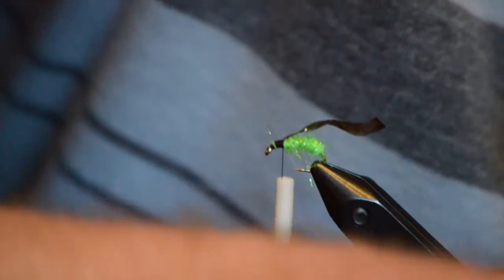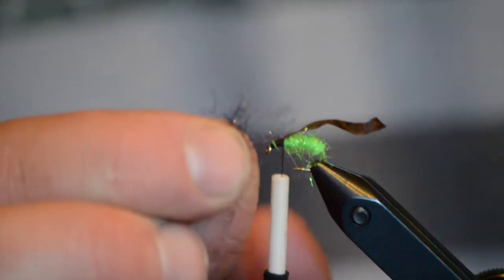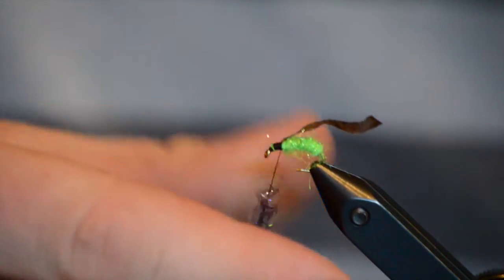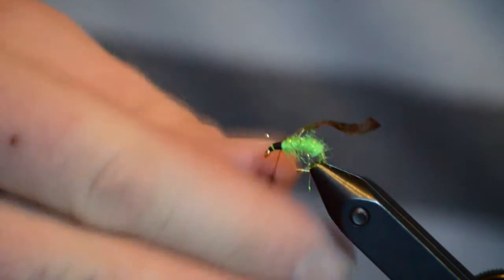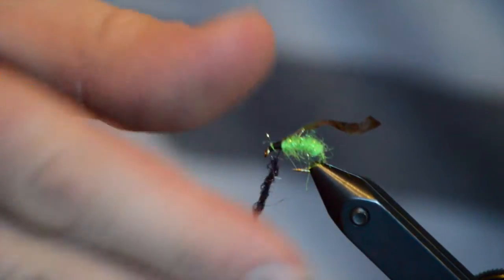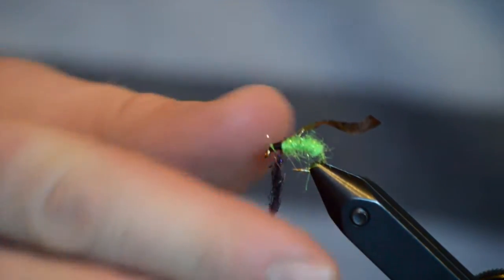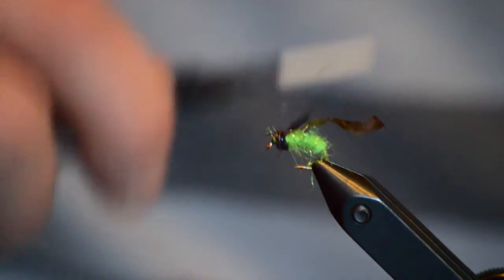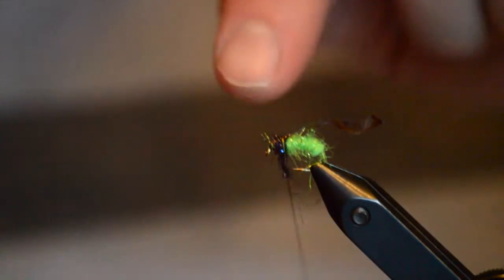Next we're going to take our ice dubbing and we'll pick a dark color. We're trying to imitate the legs of these caddis patterns so we're going to dub this pretty loosely. We'll stick that on the thread and then roll it. You want to make sure and roll it in one direction and kind of keep it messy. We don't want those fibers to be rolled super tight on this pattern. After we've rolled that we'll wrap it forward and build our thorax.